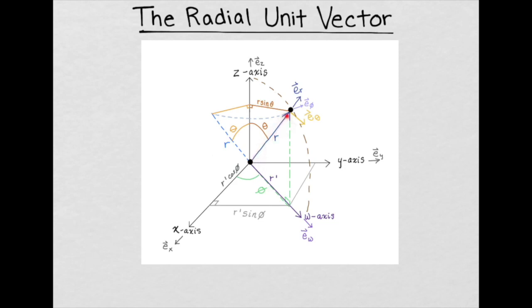This dark blue vector is called the radial vector with length r, and the radial unit vector is a unit vector of length 1 that points away from the origin and in the same direction as this radial vector.